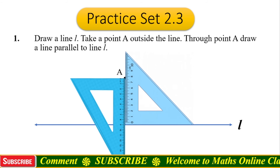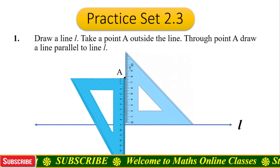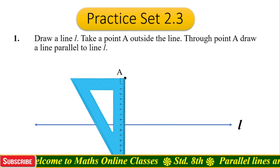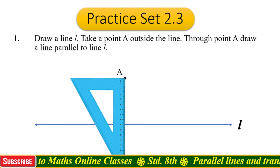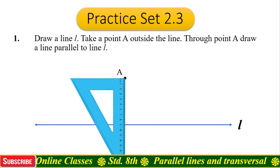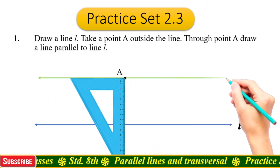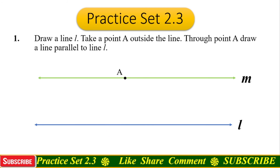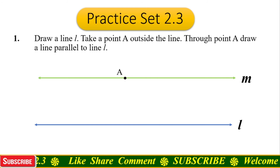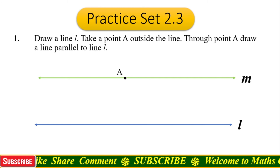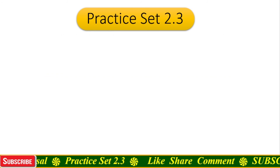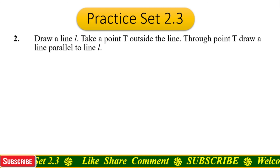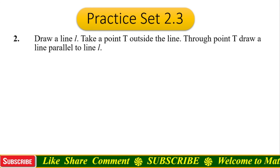Place the second set square so that its horizontal side matches to point A. Now remove set square one, and with the help of the second set square draw a line which passes through point A. Name this line m. Remove the set square — we have drawn line m parallel to line l, passing through point A. Question number two: Draw a line l, take a point T outside the line, and through point T draw a line parallel to line l.